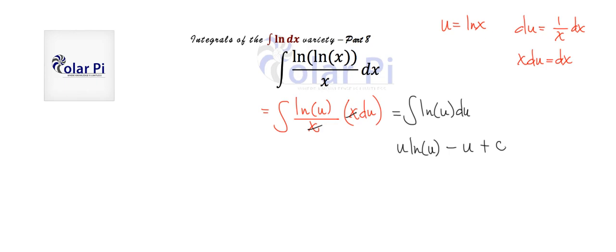And of course, u here is ln x, so our final answer is going to be that this is equal to the natural log of x times the natural log of the natural log of x—that's a lot of ln—and then minus the natural log of x, and then of course plus c.